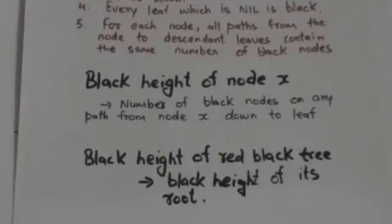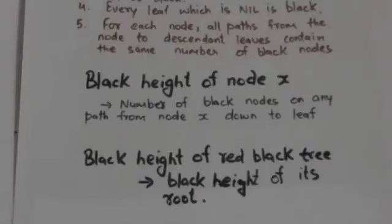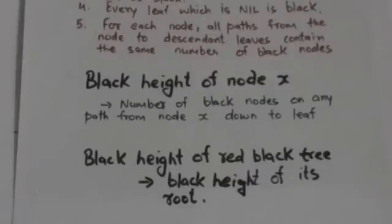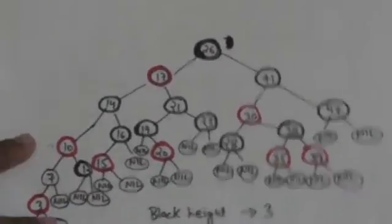The next topic is black height of a node x in a red-black tree. For a node x, the number of black nodes on any path from node x down to a leaf, but not including node x itself, is called the black height of node x. Remember that in a red-black tree, all paths from a node to its descendant leaves have the same number of black nodes. The black height of a red-black tree is the black height of its root.